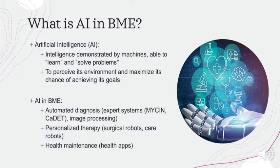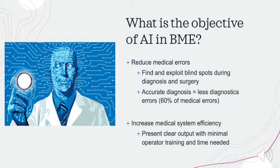AI can be implemented in several biomedical engineering technologies in order to enhance the diagnosis, therapy, and health-maintenance process. Examples include expert systems such as MYCIN for bacterial diseases and CADET for cancer detection, automated image processing systems, medical robots such as care and surgical robots, and health apps that provide personalized health advice. As AI could learn from problems hidden from humans to further reduce errors during diagnosis and surgery, diagnosis problems make up around 60% of all medical errors.